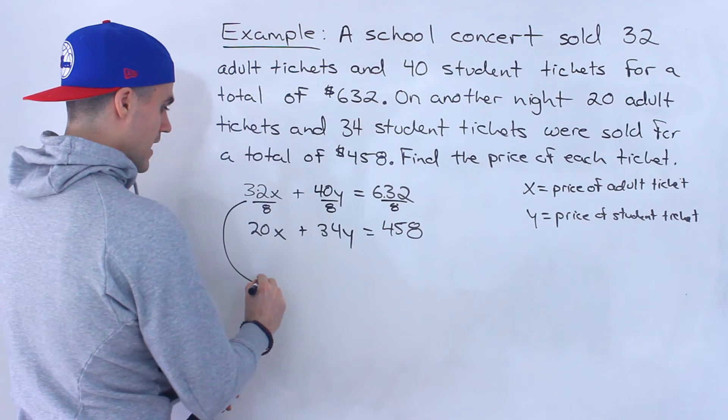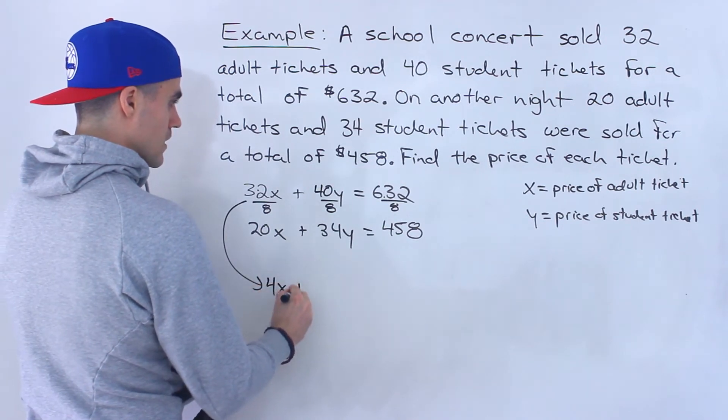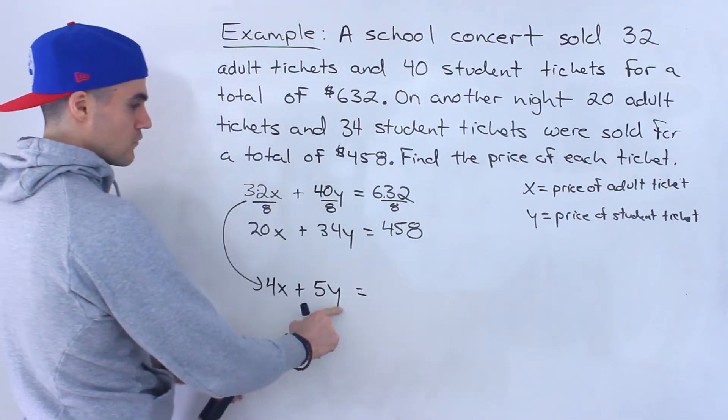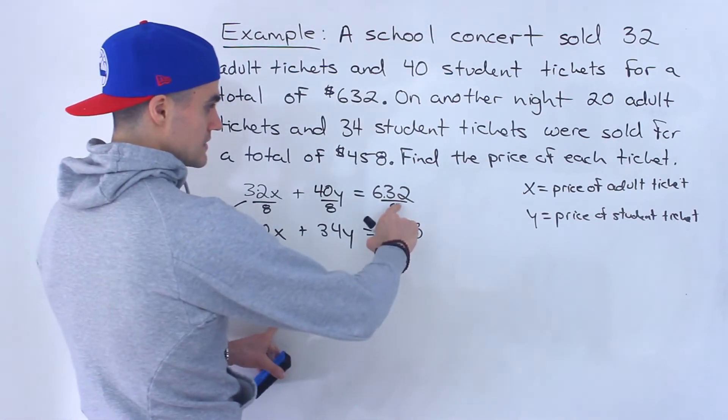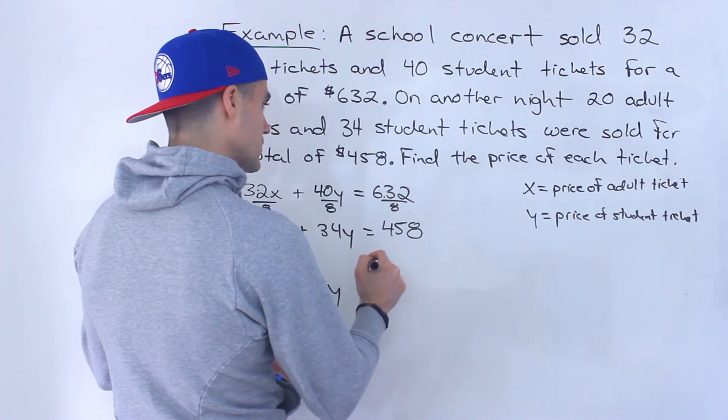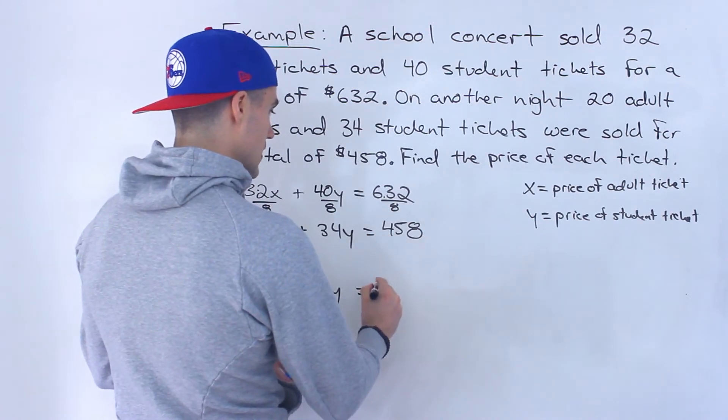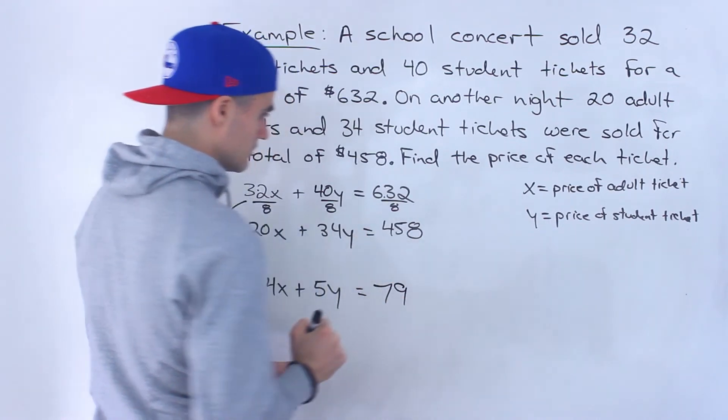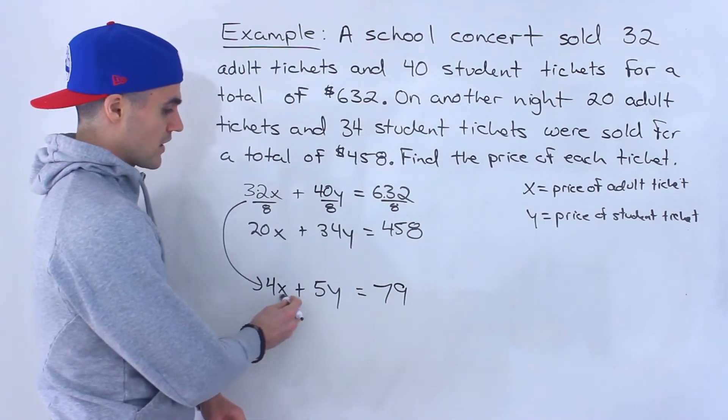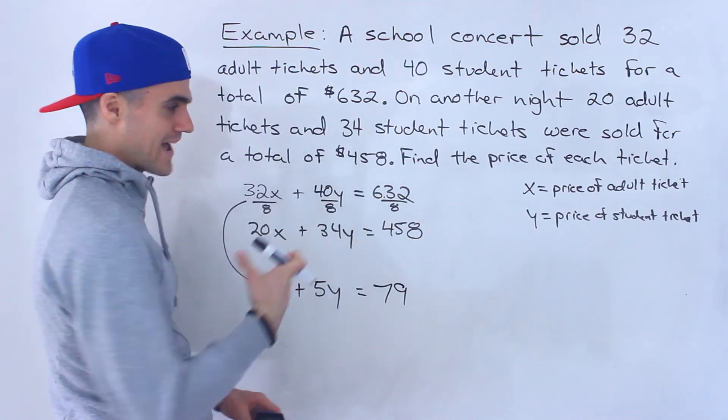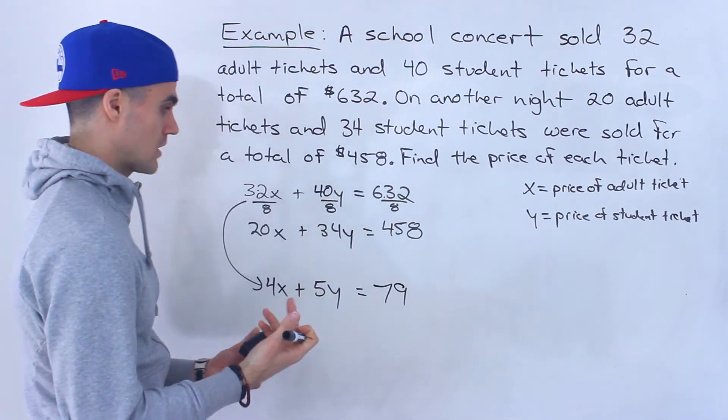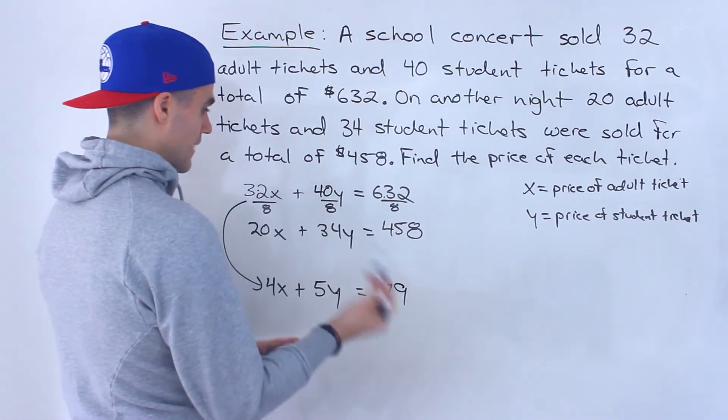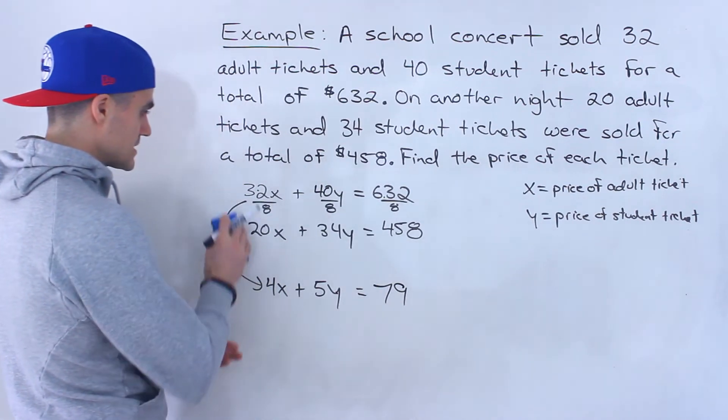Notice that 32 divided by 8 is 4, 40 divided by 8 is 5. So we've got 4X plus 5Y. Then 632 divided by 8 would give us 79. And so now this equation, 4X plus 5Y equals 79, is the exact same as that original equation that we had. Notice how this is a lot more simple to work with, the numbers are more simple.